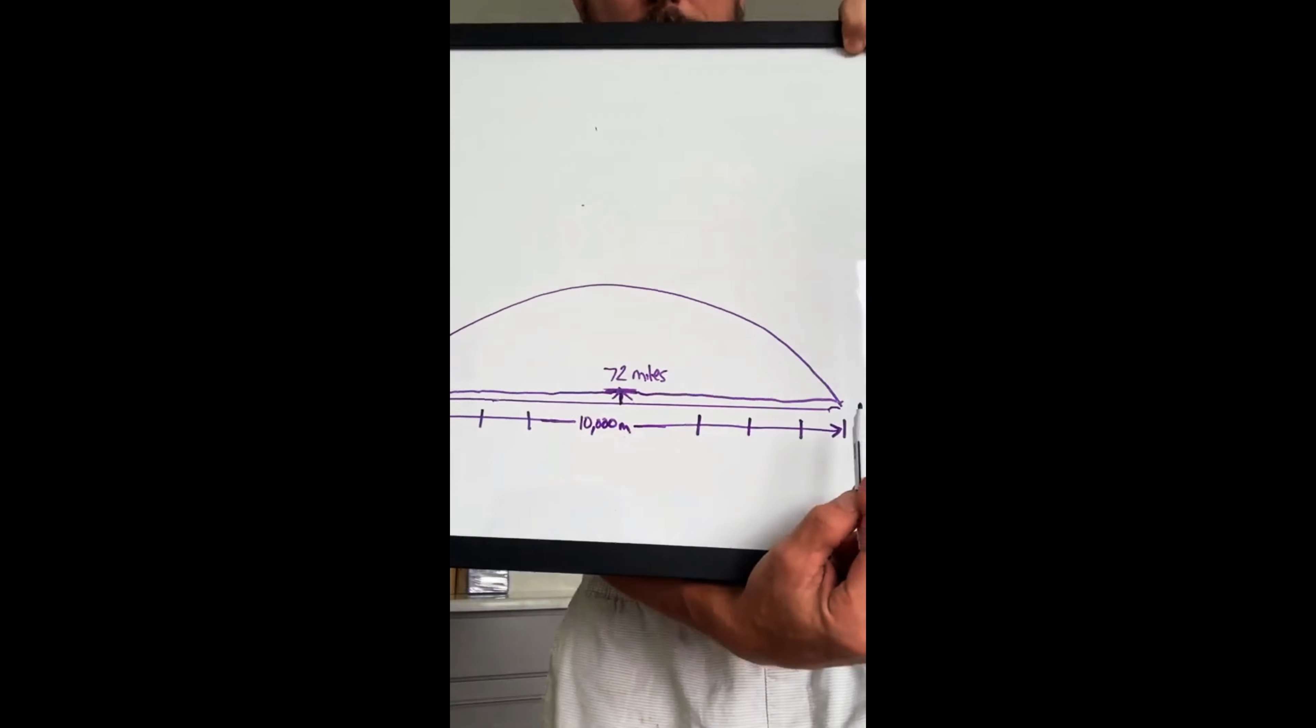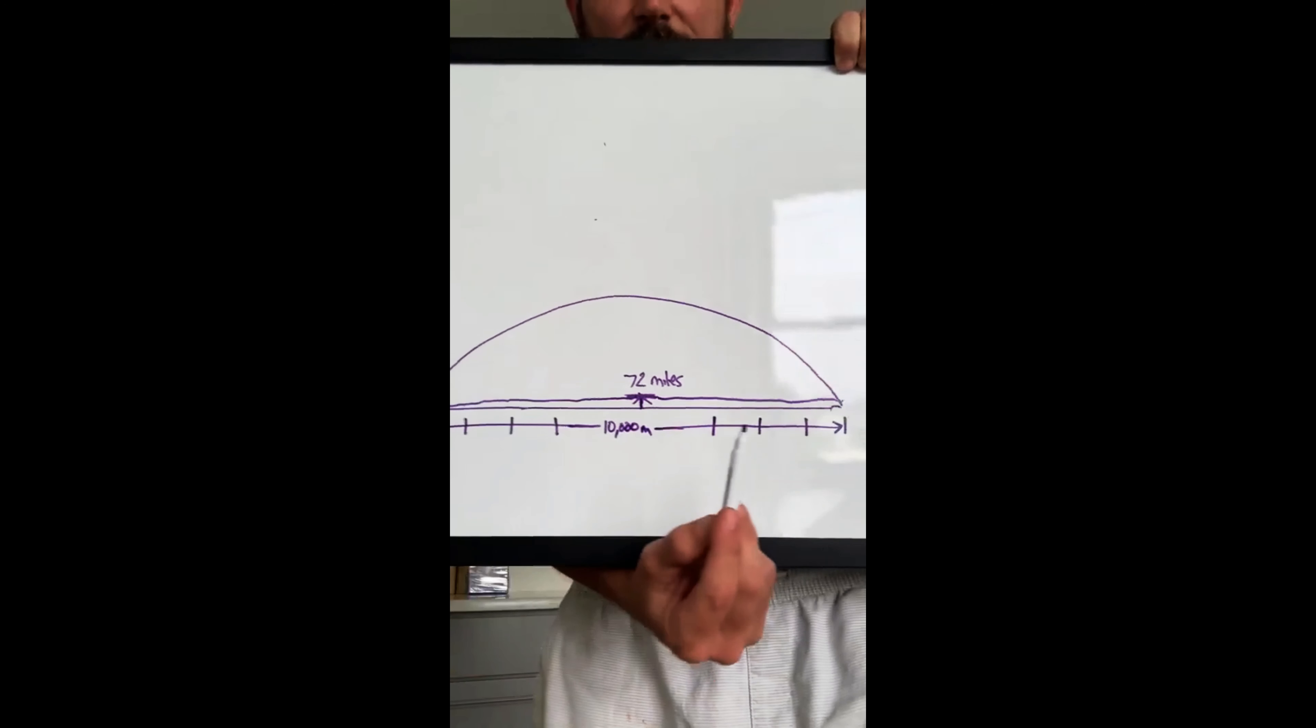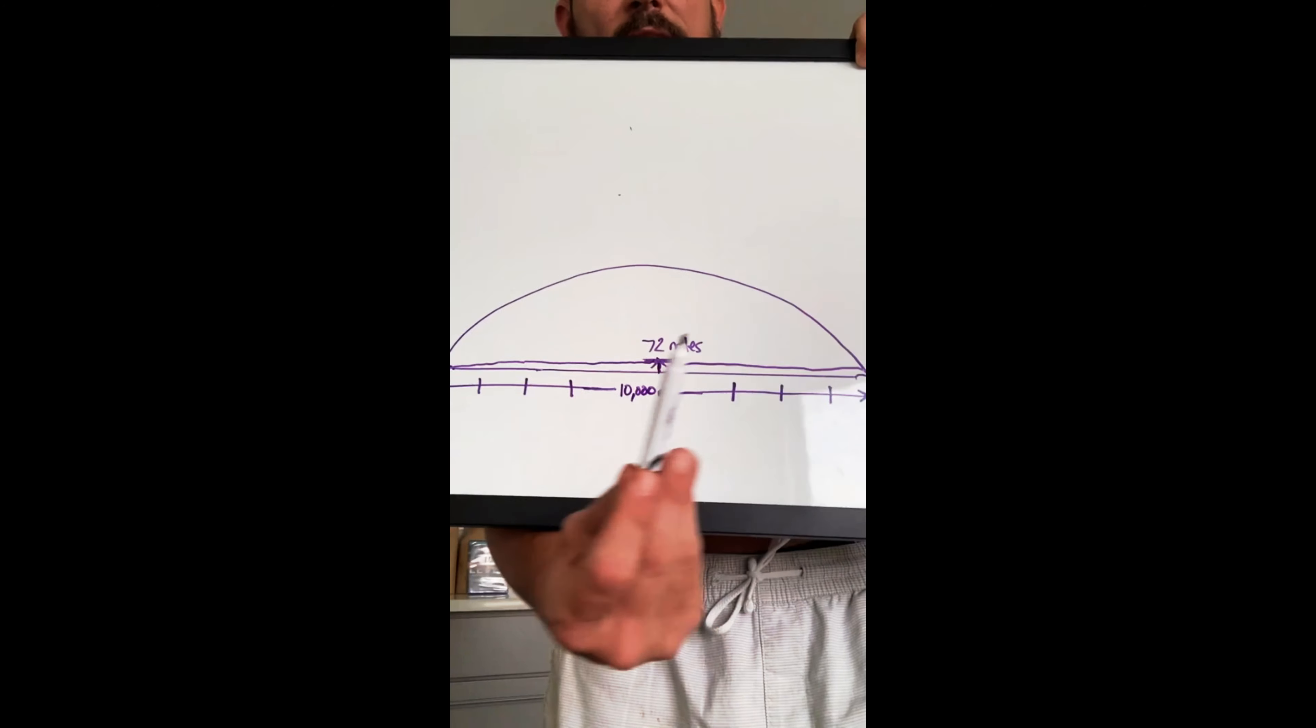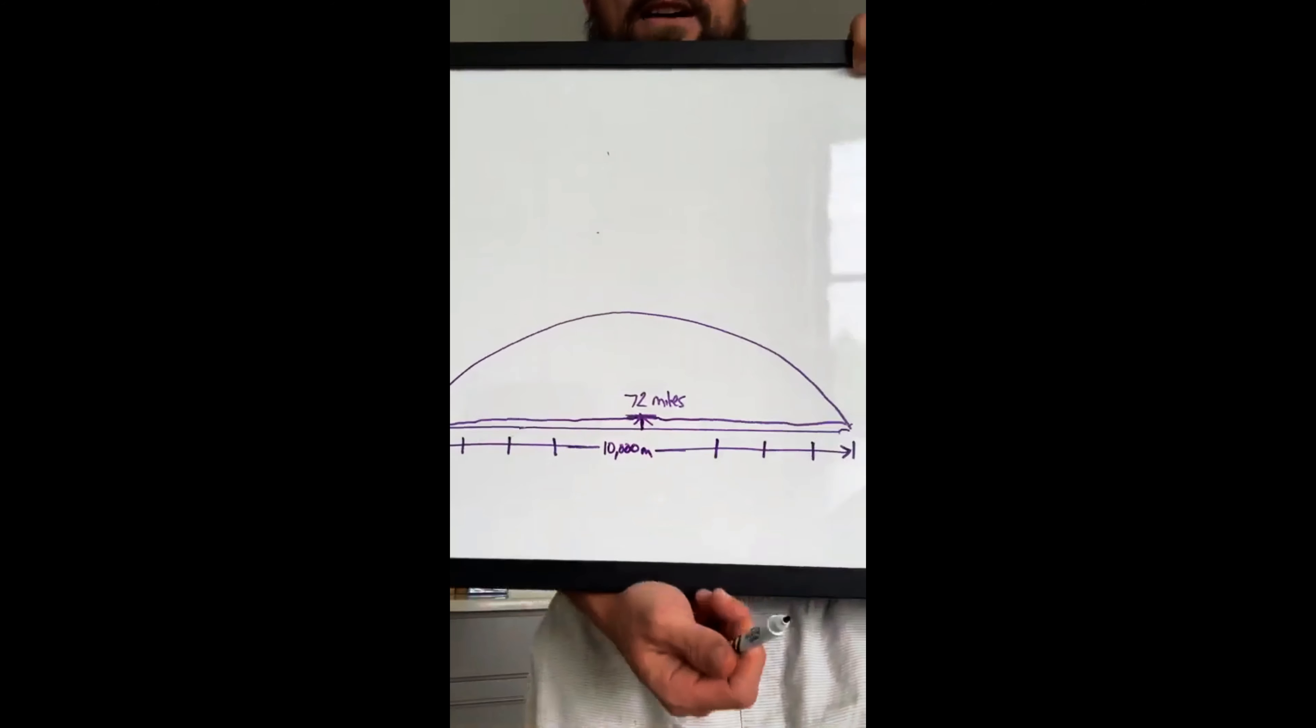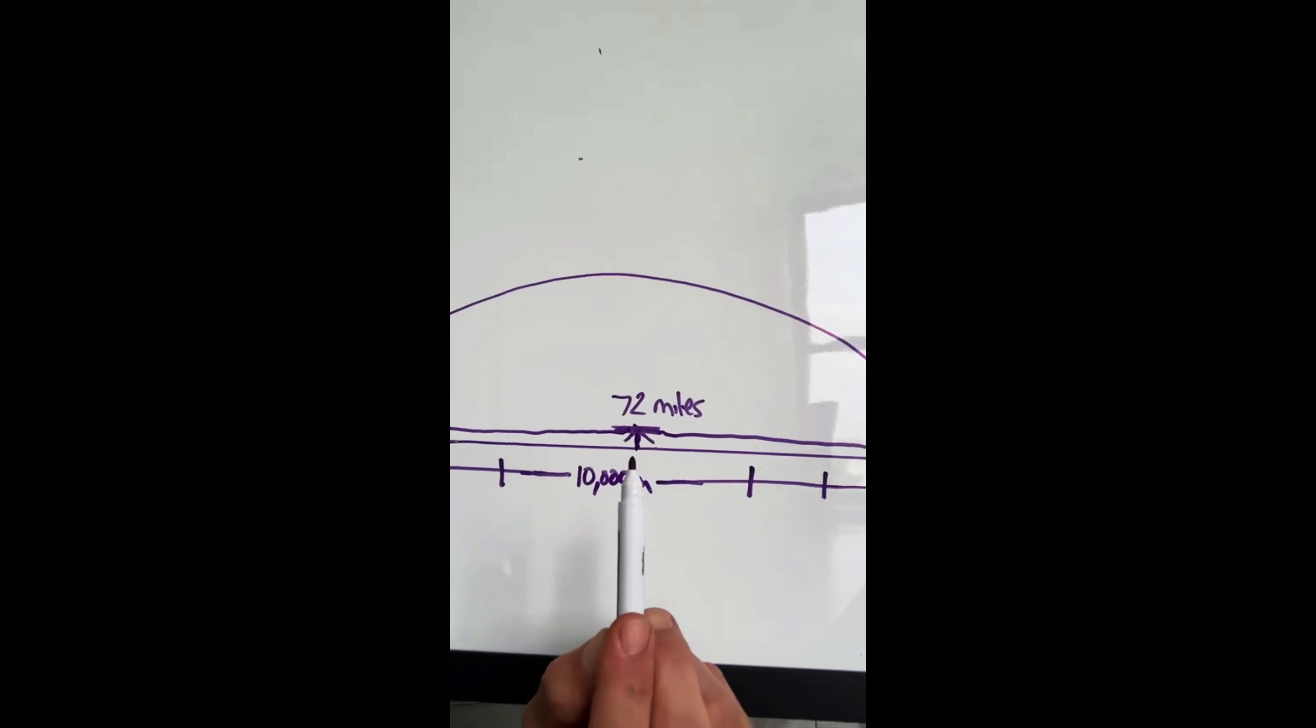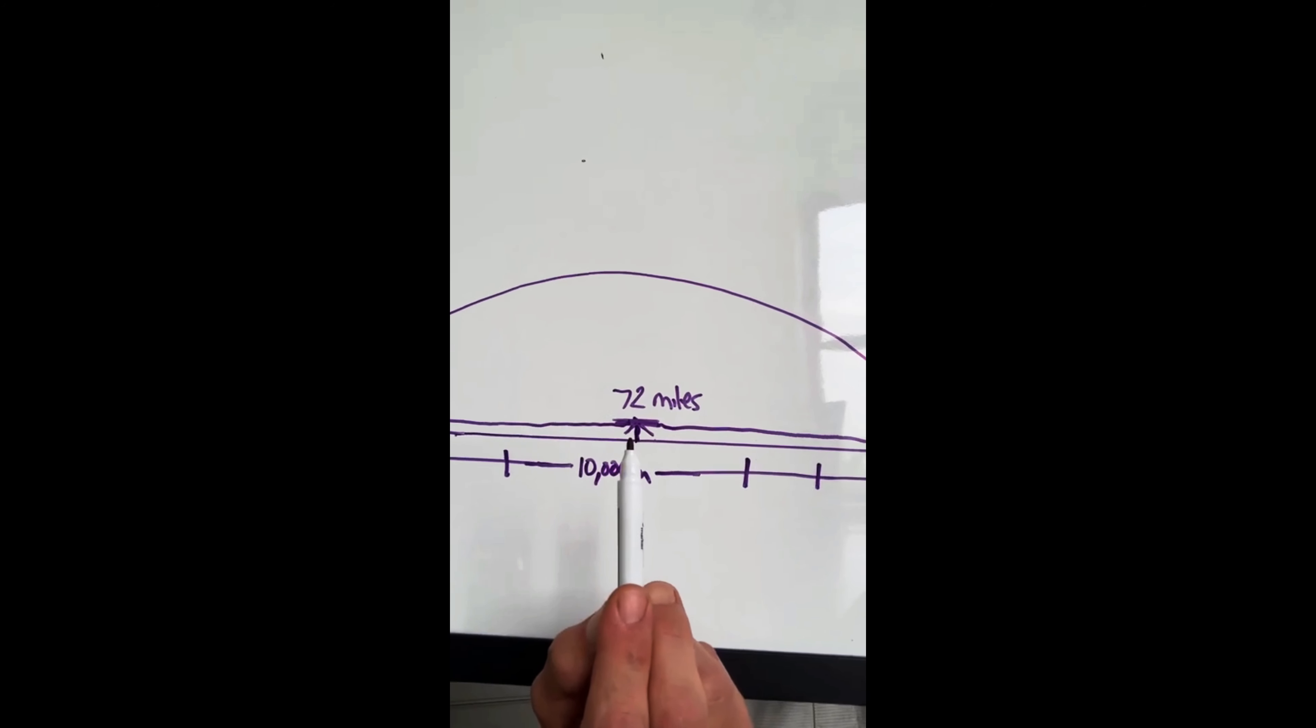Let's say from coast to coast across the realm here is 10,000 miles. Let's just say that. I tell us it's 25,000 in circumference. Let's just use 10,000 miles. If we can only go up 72 miles, there's a little dot here.